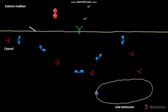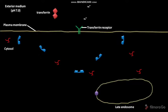This is the plasma membrane of a cell. The plasma membrane has a transferrin receptor. The pH of the exterior medium is 7.0. The exterior medium of the cell contains transferrin protein. The transferrin is a dimer and a glycoprotein, present in the blood.